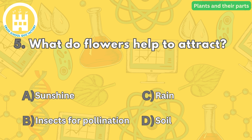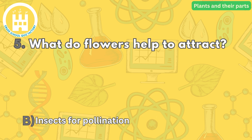Question number five: what do flowers help to attract? The correct answer is letter B — insects for pollination. Flowers have bright colors and sweet scents to attract pollinators like bees, butterflies, and birds, which help in the pollination process.